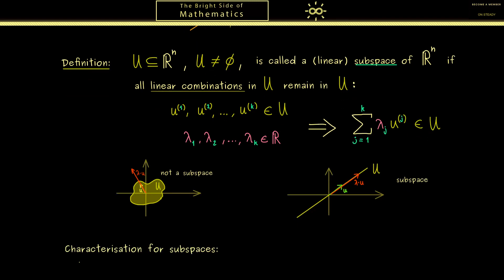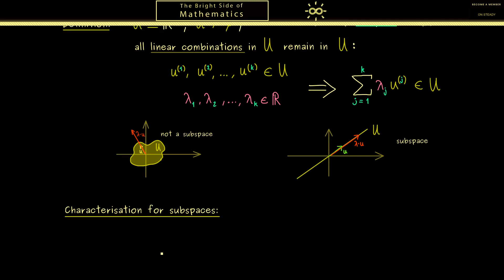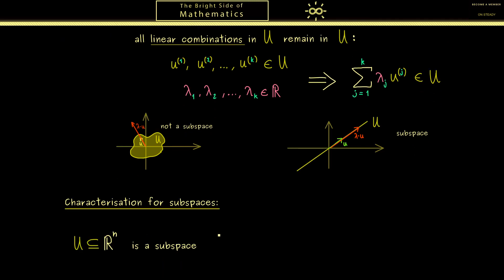Therefore now in the next part I want to show you how you can easily check if a set U is a subspace. This characterization is very helpful when you calculate with concrete examples. It tells us that any subset U in Rⁿ is a subspace if and only if 3 conditions are satisfied. Of course from before we already know the conditions but it's helpful to write them down. Simply because now we have an order how to check for a subspace.